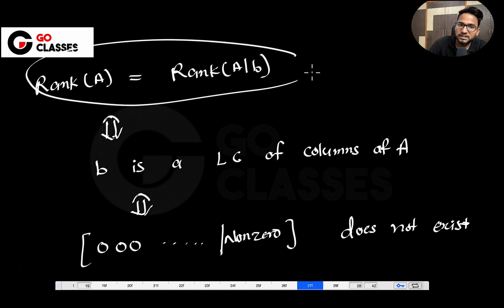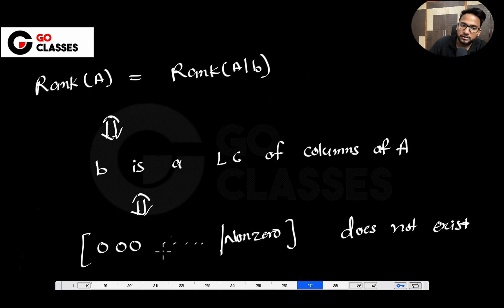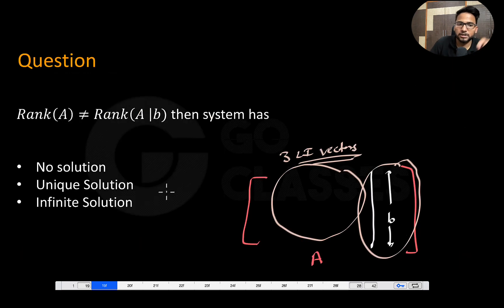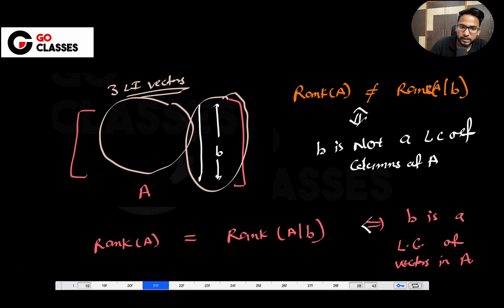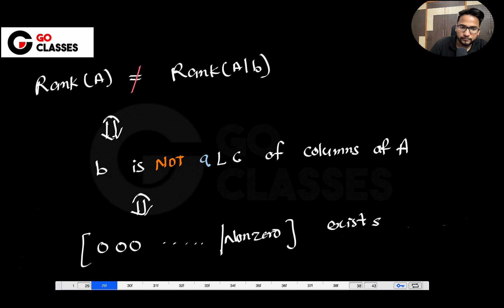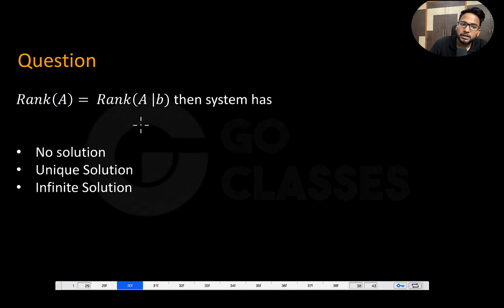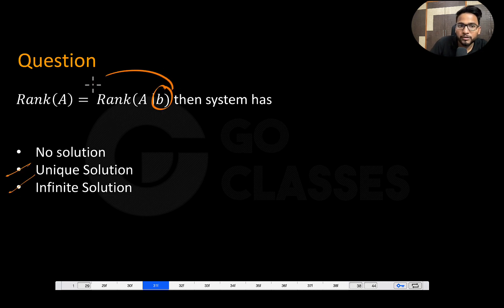Now answering the question: if both ranks are not equal, b is adding something extra, so no solution. If both ranks are equal, b is a linear combination of columns of A — so maybe a unique solution or maybe infinite solutions. That is the only inference you can draw from the rank equality alone.